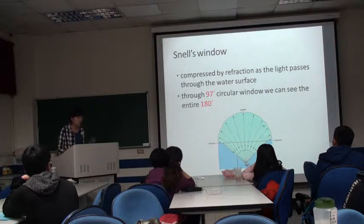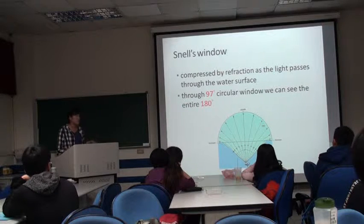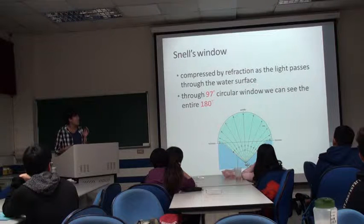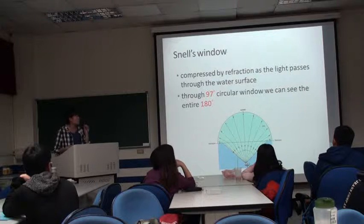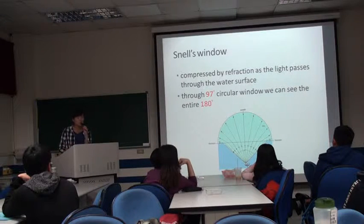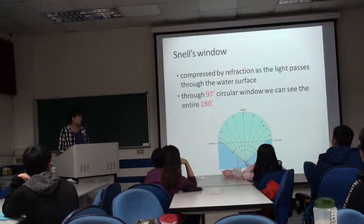What is Snell's window? Snell's window is a theory. Because of this theory, they can see whatever is above the water surface. When light passes through the water surface, the image is compressed by refraction. The theory states that through a 97-degree circular window, you can see the entire 180 degrees above. In other words, they can see everything above the water surface through this circle.